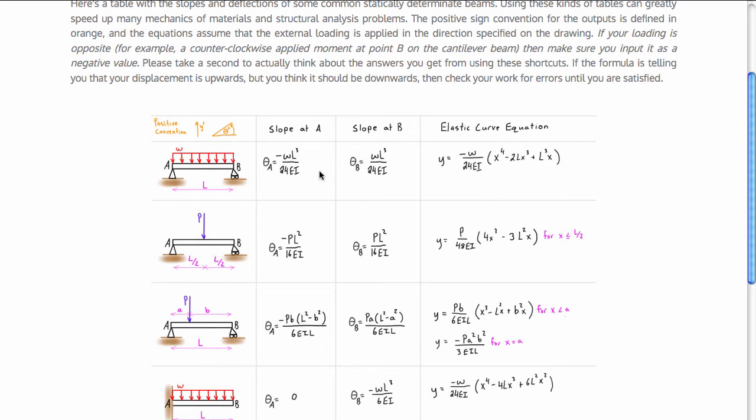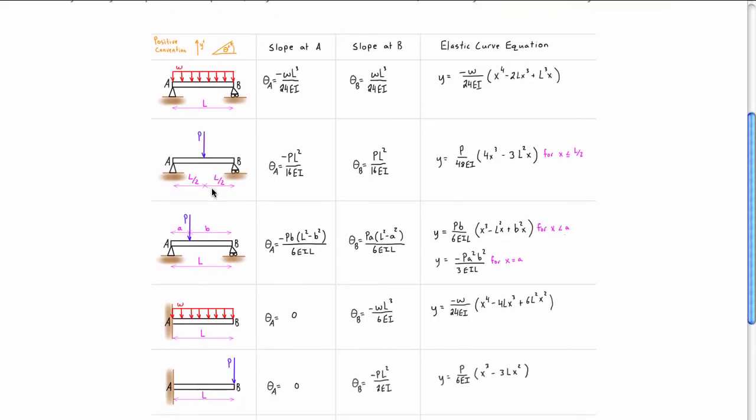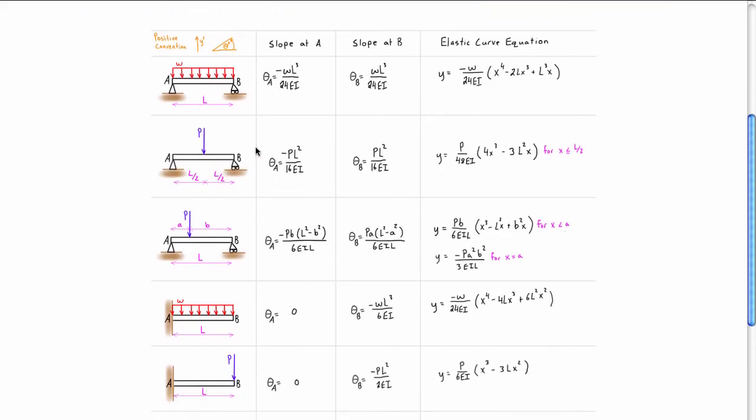You can get switched around depending on how the table is set up. So be really cautious with that. If you're expecting something like if you have a point load pressing down and you're expecting that deflection to be downwards of the beam, and you're getting some value that says it's going up, again just stop, see if you've made a math error or something. And then once you're satisfied with your answer, then you can proceed.